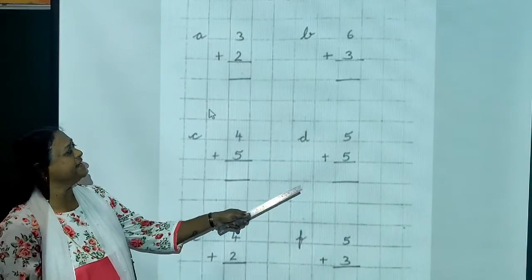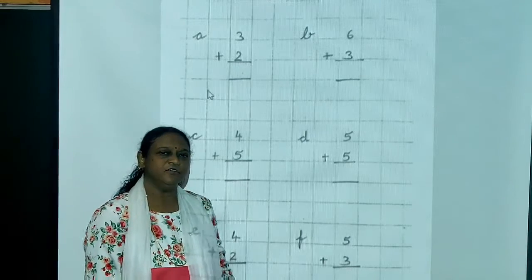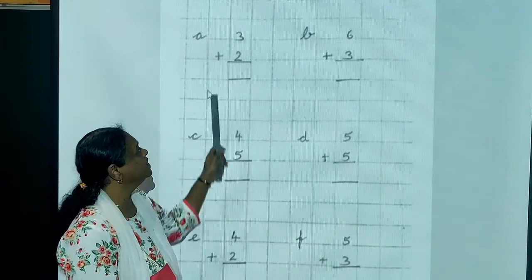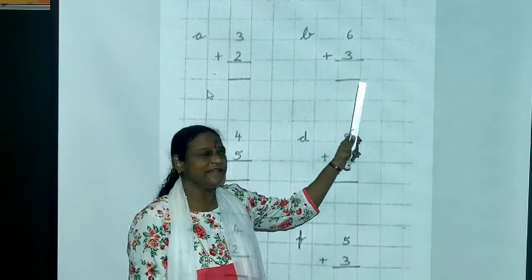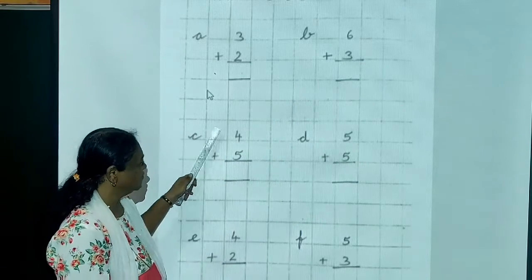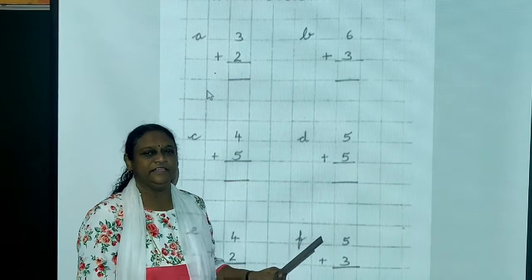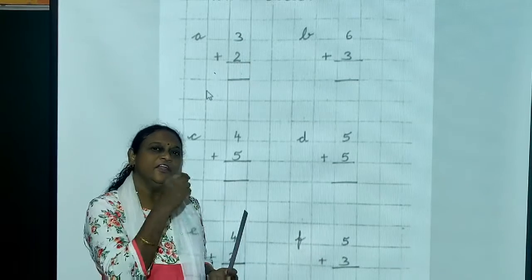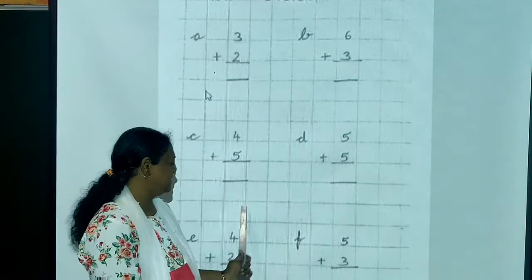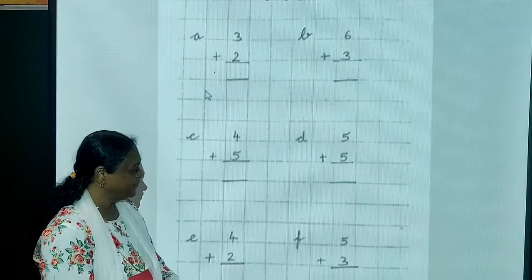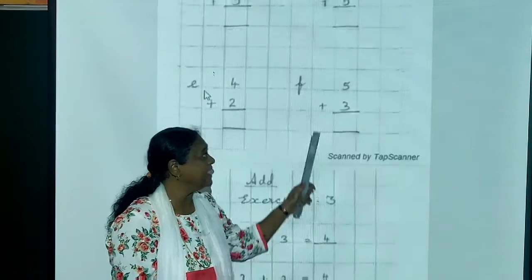Now, this is the second exercise which you have to write on your own. 3 plus 2. Write the answer. 6 plus 3. Write the answer. 4 plus 5. You have to count and write. If you can't count with your fingers, draw lines and count. 5 plus 5, that is 10. 4 plus 2. Then 5 plus 3. Like this, second exercise you have to do.